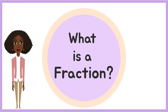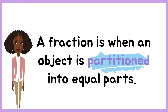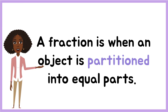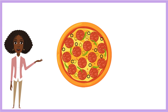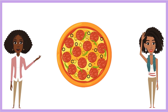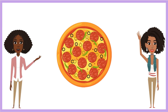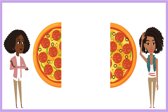First, let's talk about what a fraction is. A fraction is when an object is partitioned into equal parts. Let's talk about this big word we just heard: partitioned. Can you say it with me? Partitioned! Great job! Partitioned means that you separate or divide something. For example, if I have this delicious pizza and I want to share it with a friend, I can partition it — like this. I just separated it into two equal parts. Now my friend can have a slice, and so can I!